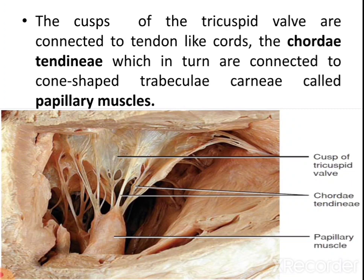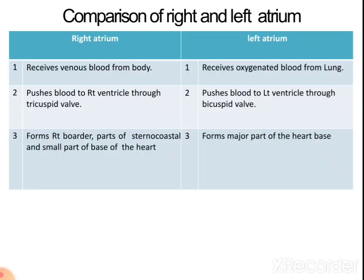Papillary muscles control the opening of the tricuspid and bicuspid valves and are found in the ventricles. Comparing right and left atria: the right atrium receives venous blood while the left atrium receives oxygenated blood from the lungs. The right atrium transfers blood to the right ventricle while the left atrium transfers blood to the left ventricle. The right atrium forms the right border of the sternocostal surface, while the left atrium forms the major part of the base of the heart.